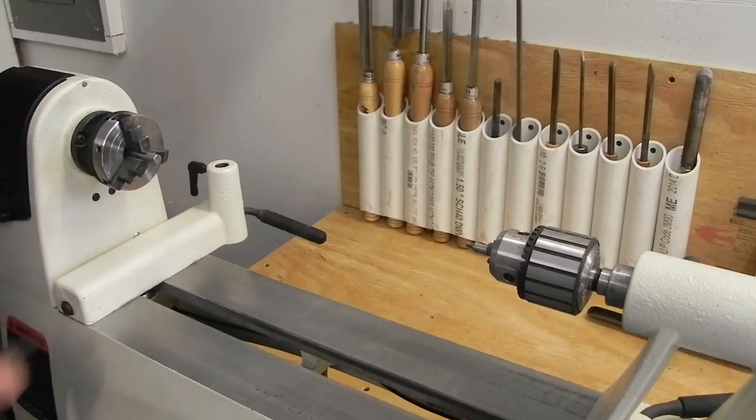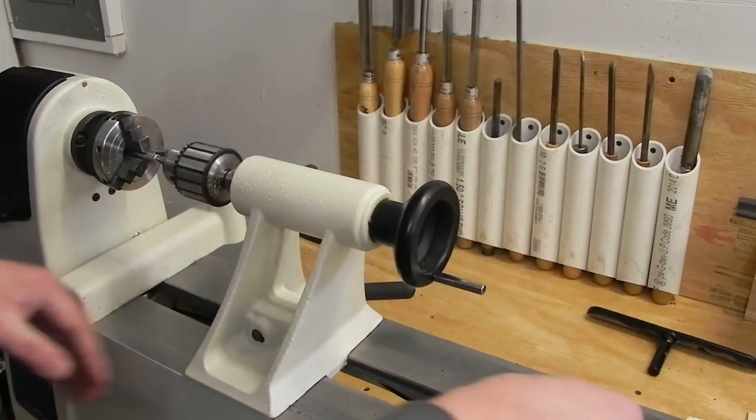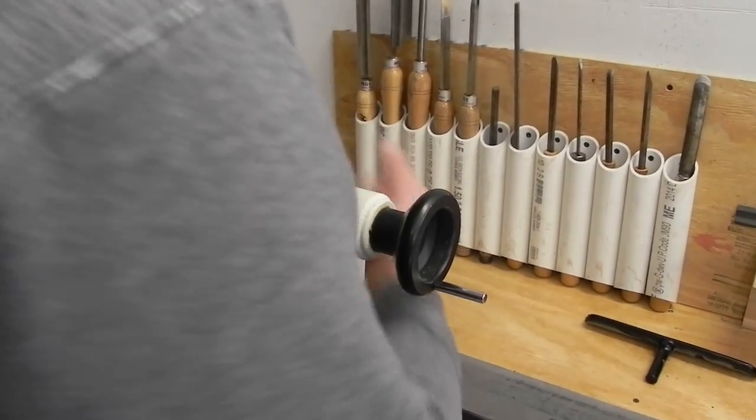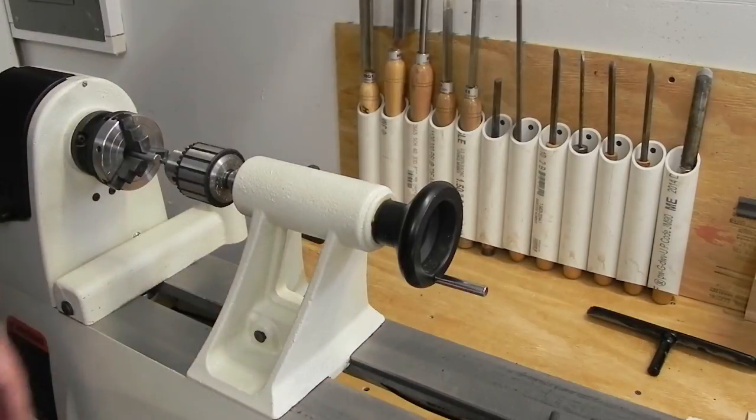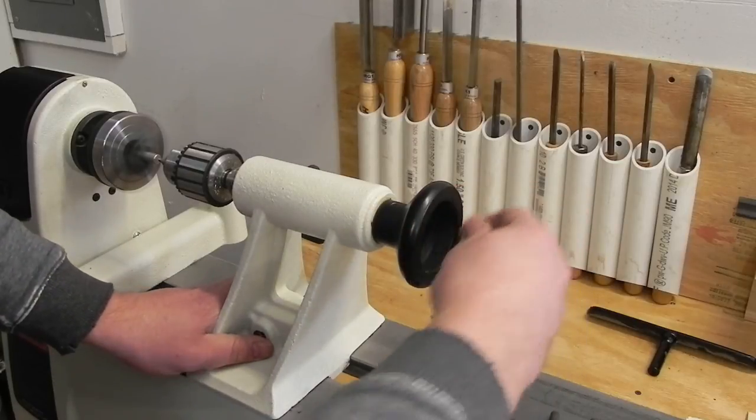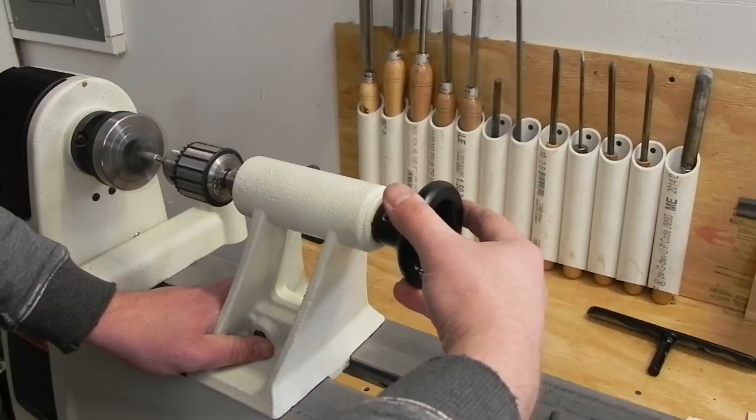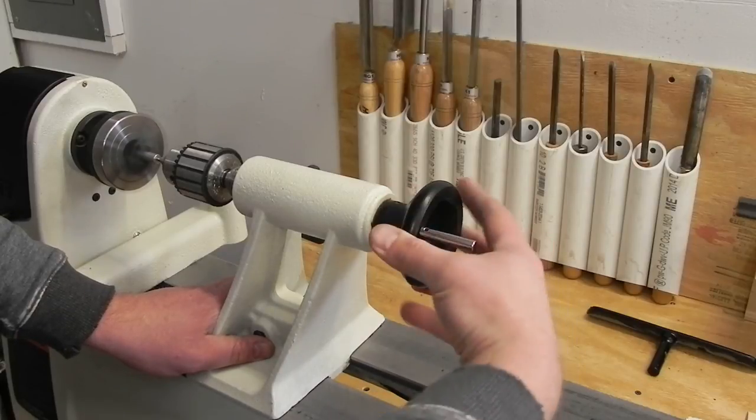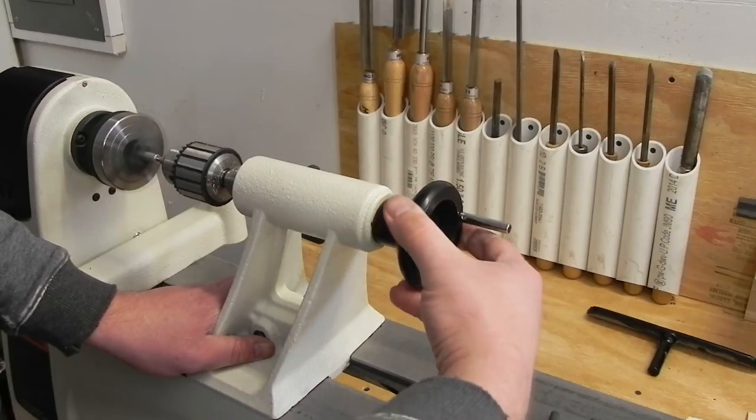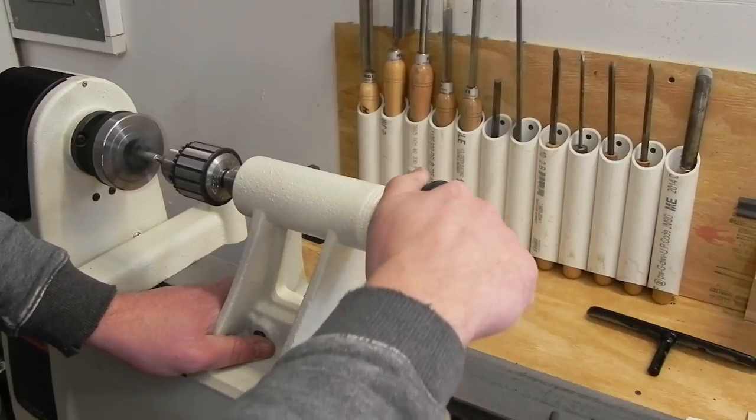Only half an inch sticking out will keep the wobble down. Bring the tailstock over, make sure it's nice and true. I run this at about 1300 RPM, slowly find my center, and drill away.